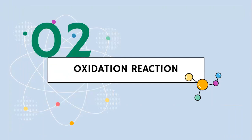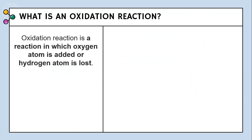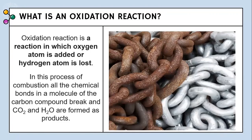Moving on to the second property of carbon compounds, that is oxidation. So what is an oxidation reaction? Reactions which involve either addition of an oxygen atom or loss of a hydrogen atom are known as oxidation reactions. In the process, the chemical bonds of the molecules break to give carbon dioxide and water as products. The picture here shows rusting of an iron chain, which is an example of oxidation.